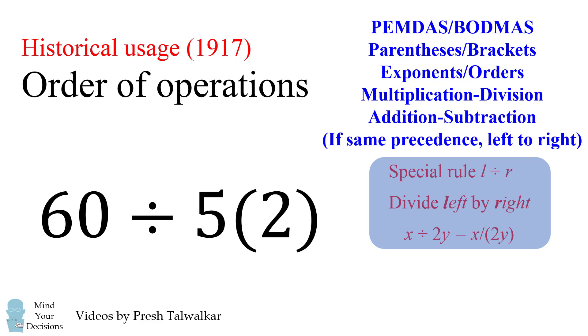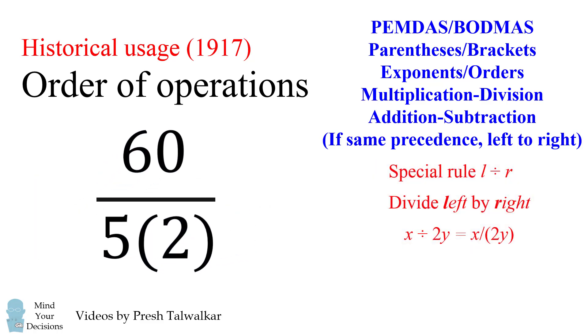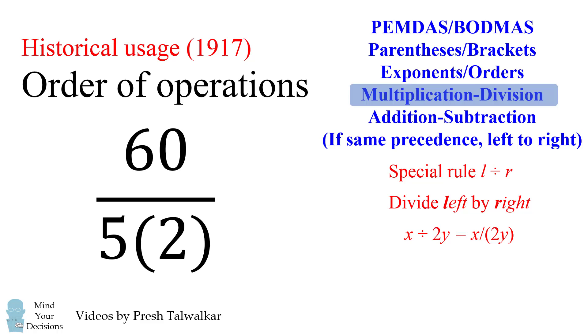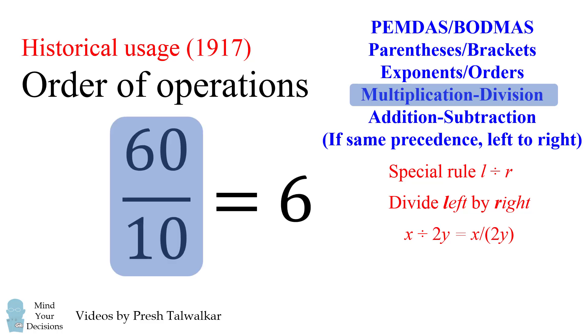So if we use this special rule, we would then need to take 60 and divide it by 5 times 2. So we take 60 on the left, 5 times 2 on the right, and we would form a fraction as follows. We then would evaluate 5 times 2 as being equal to 10. And then we would take 60 divided by 10 and get to the answer of 6. This is one way that people do interpret this question. So some people say the answer is 6, other people say it's 24.